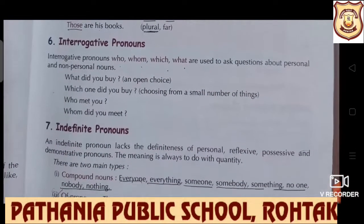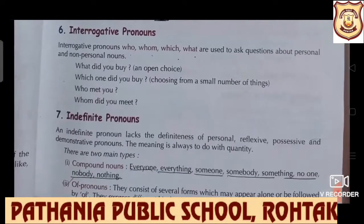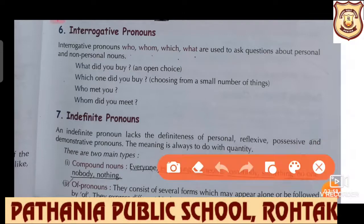Next is interrogative pronoun. In interrogative pronouns, we use WH-family members, and they are used to ask questions about personal and non-personal nouns. 'What did you buy? Which one did you buy? Who met you? Whom did you meet?' These are all WH-family members which are used to ask questions.